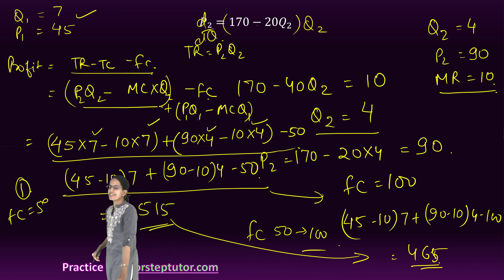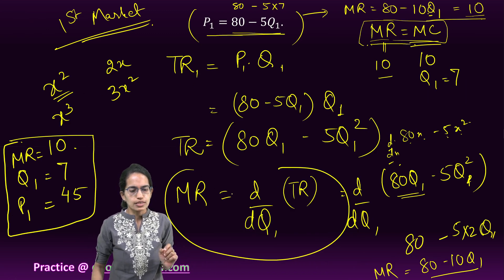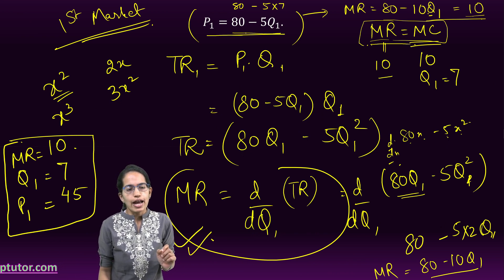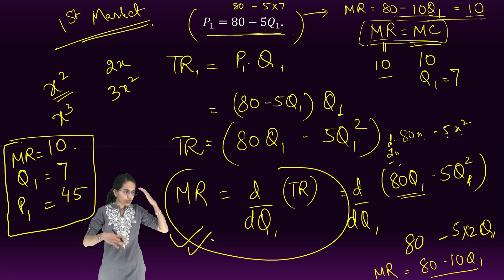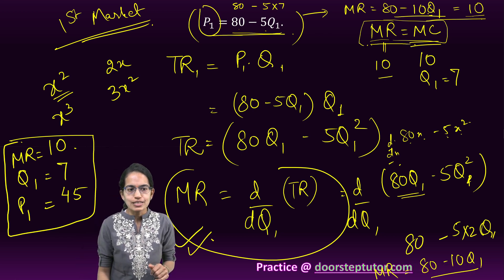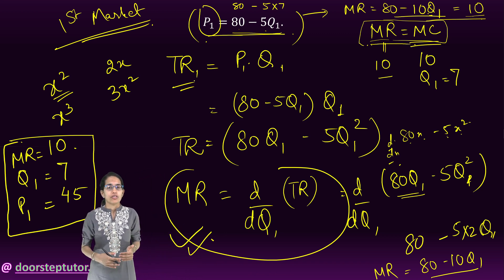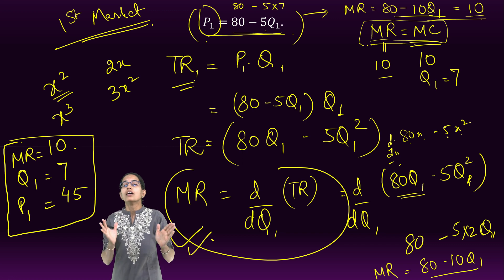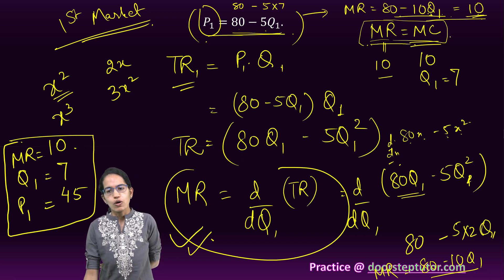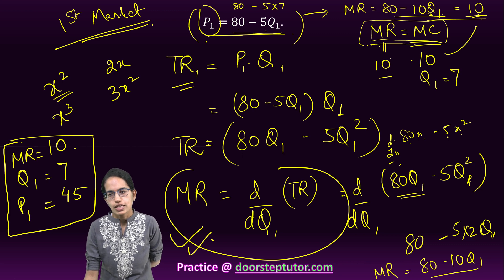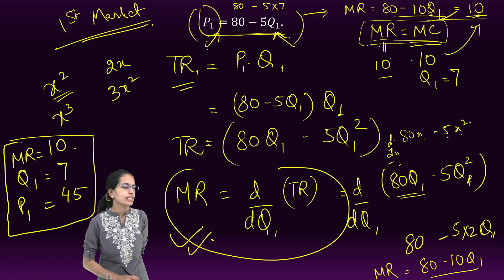That's how we solve this question. A very interesting, very simple question. But many students made a mistake at the point of finding marginal revenue — they didn't understand how 80 − 5Q becomes 80 − 10Q. You must multiply price by quantity to get total revenue, then take the first-order derivative d/dQ of PQ to get marginal revenue, which gives 80 − 10Q. Set that equal to marginal cost 10 and solve for Q1.